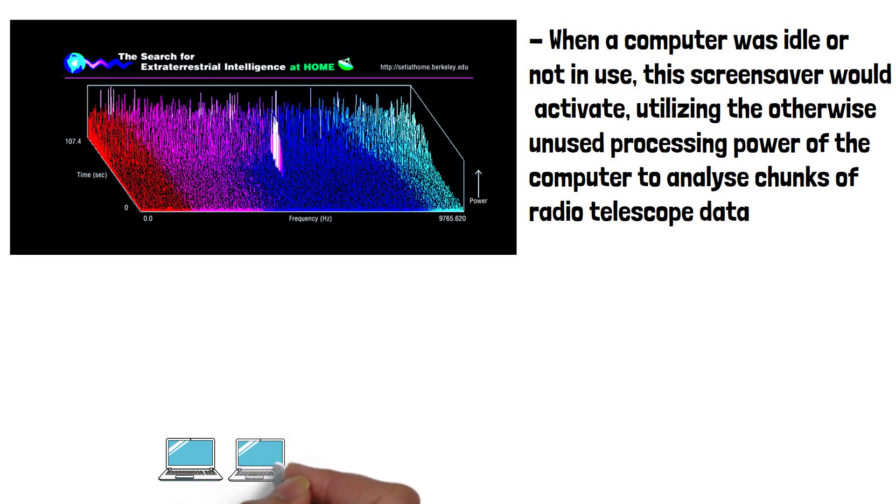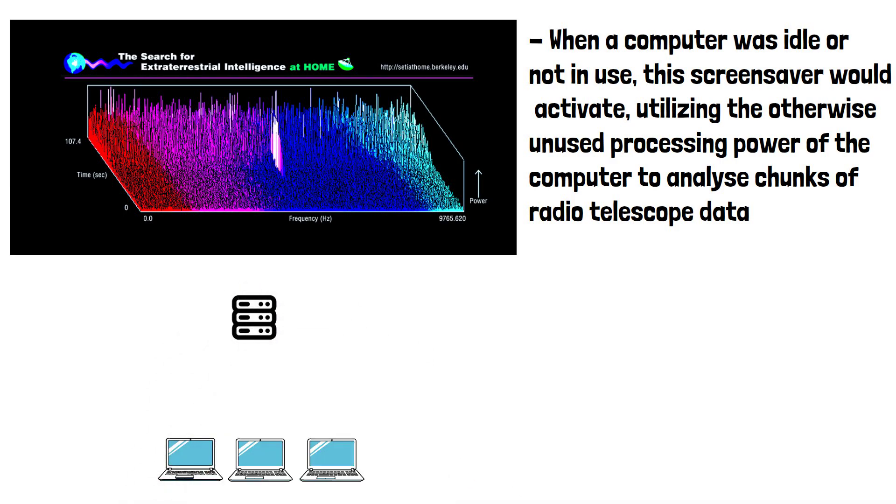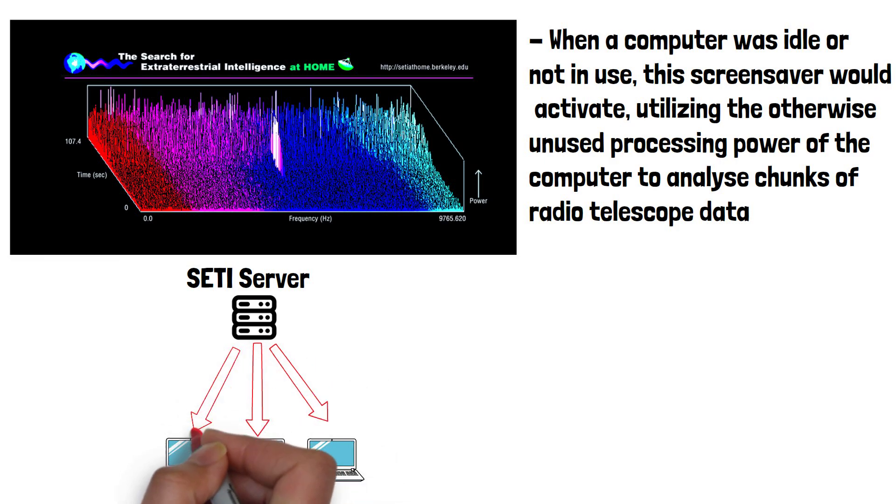The data was divided into small work units which were sent to individual computers for analysis. Each computer would examine these units for specific patterns or signals that might indicate artificial, or intelligent origin, as opposed to natural cosmic sources.